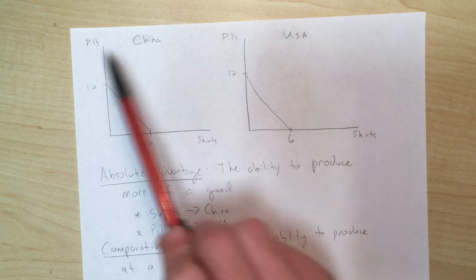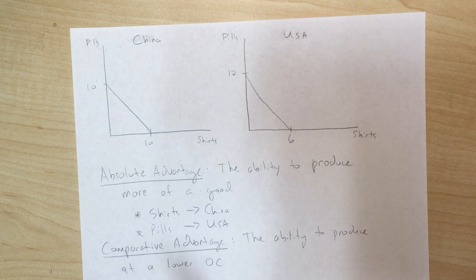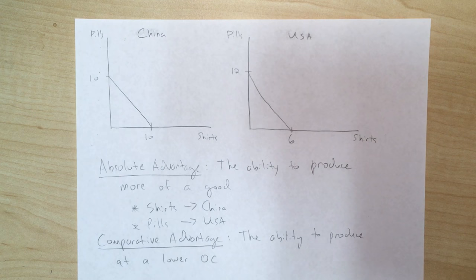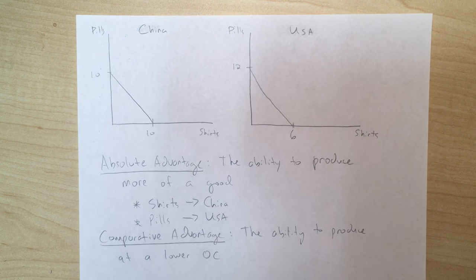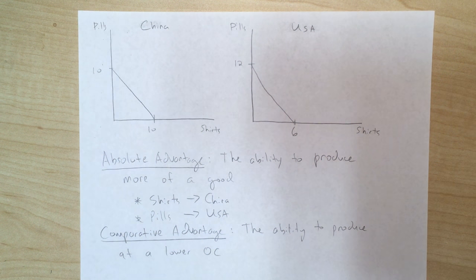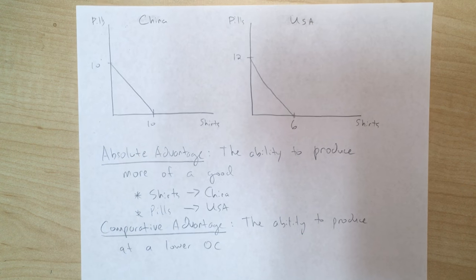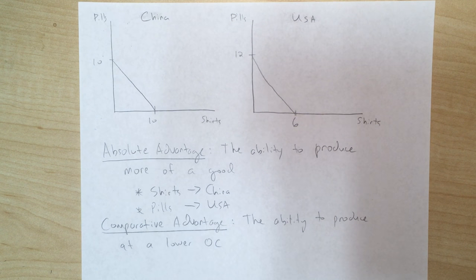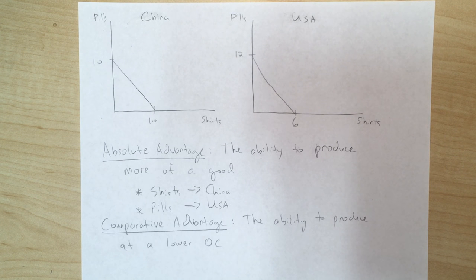This is not about which country is necessarily better at producing goods overall, but which one is relatively good at producing it — kind of like asking which country is better at producing pills compared to shirts, not just in general. To solve for comparative advantage, we need to figure out opportunity costs, which means doing some math. In this case the math is pretty simple.